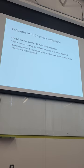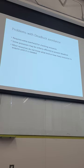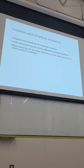Another downside of deadlock avoidance is that it assumes you always know in advance how many resources each process will need — which is often not the case. So avoidance may not always be valid when resource needs are variable.